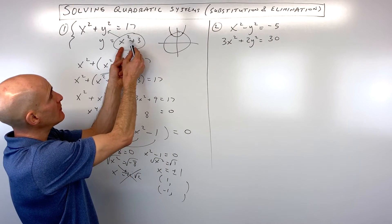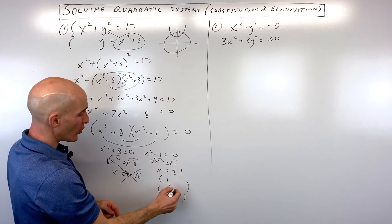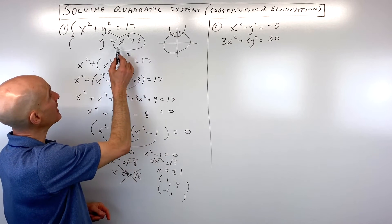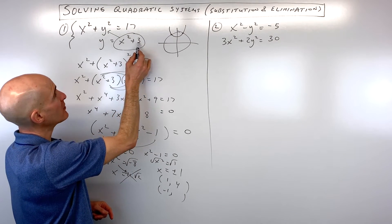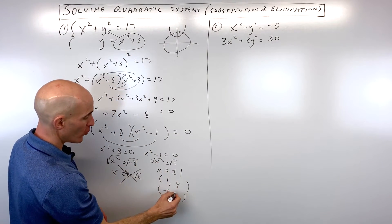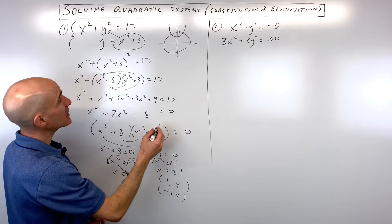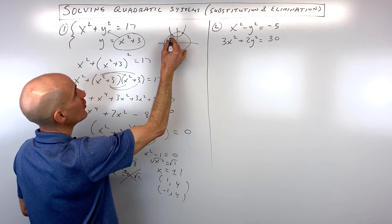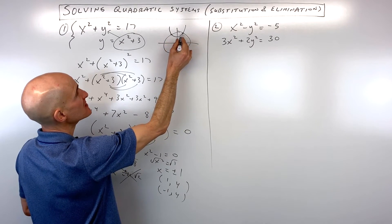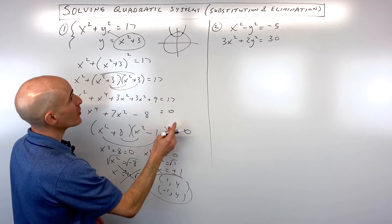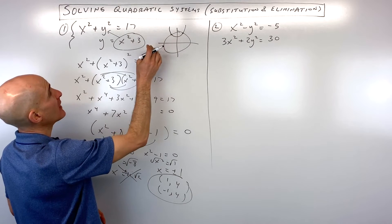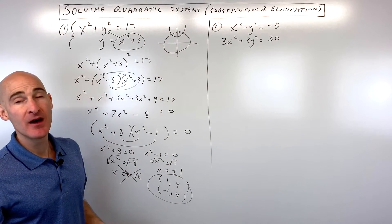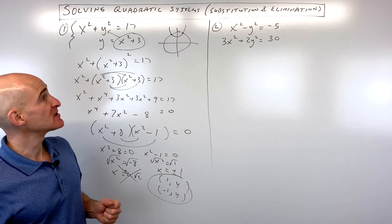1 squared is 1, plus 3 is 4, so that's the point (1, 4). Putting in negative 1: negative 1 squared is 1, plus 3 is 4, so we get (negative 1, 4). Those are the two points where the parabola and the circle intersect.